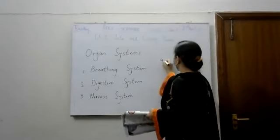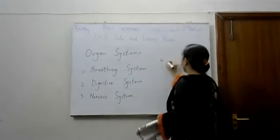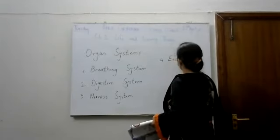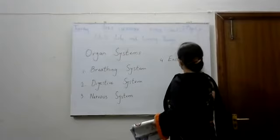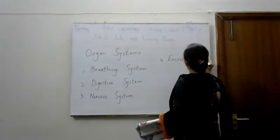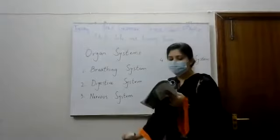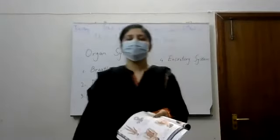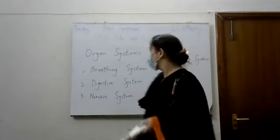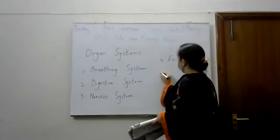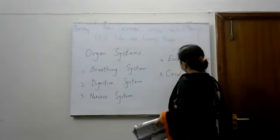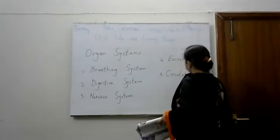Fourth one is the excretory system. What is the excretory system? The excretory system means to expel the poisonous substances and waste substances from the body.